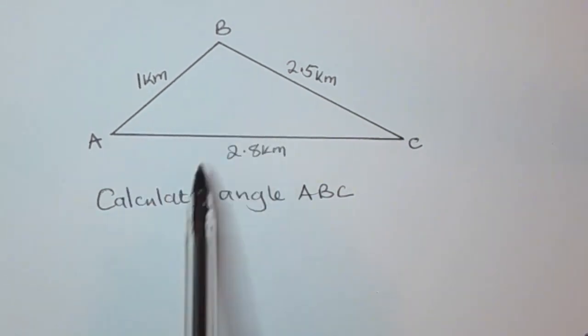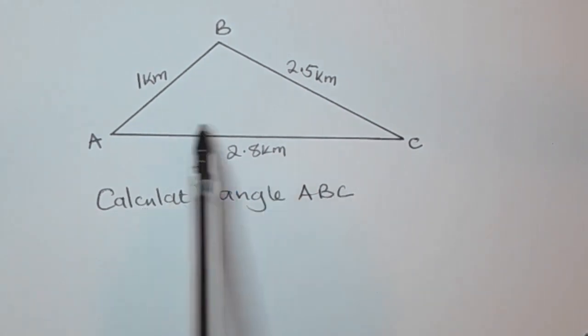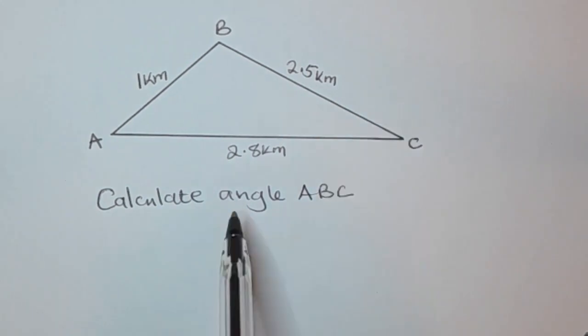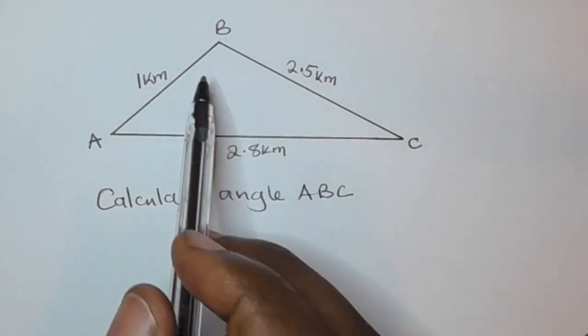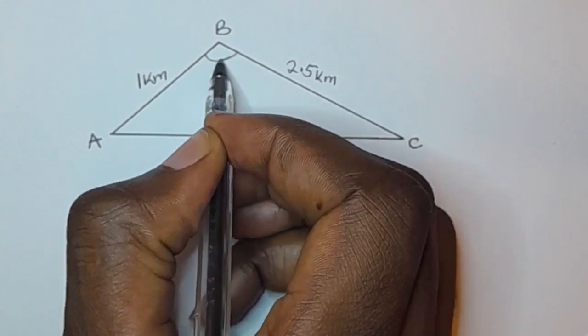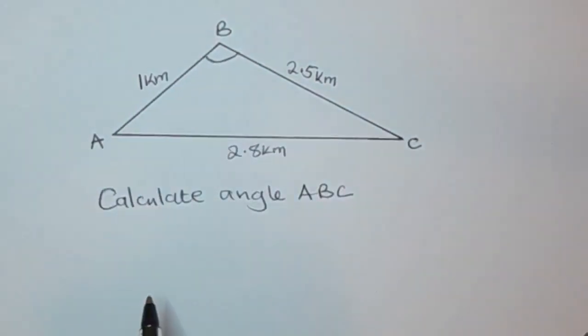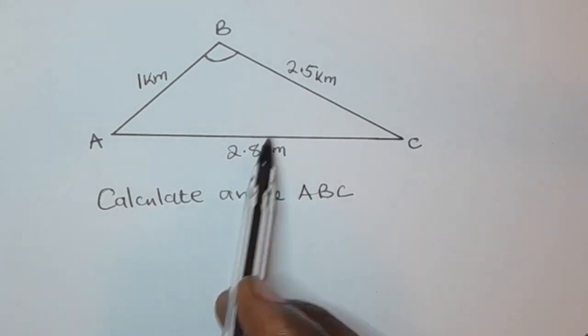So as you can see here the question says calculate angle ABC. The middle letter here indicates the vertex at which that angle is, so the angle is at B. So here this is the angle they are asking us to find.